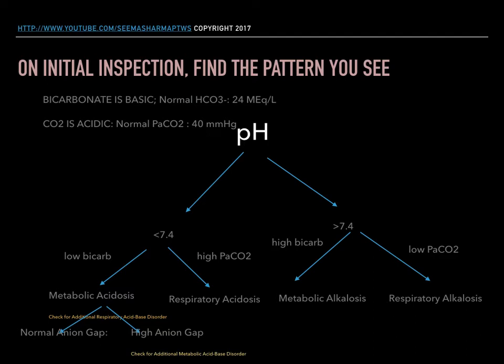For the purpose of teaching in this video, I'm going to consider bicarbonate having a normal value of 24. Usually in a vignette you're given a range close to 24, like 22 to 28, but for the purpose of teaching I'm going to use just one value. Carbon dioxide lends an acidic quality to any solution, so the higher the pressure of carbon dioxide the more acidic something is going to be. We're going to consider the normal pressure of carbon dioxide to be 40 millimeters of mercury.